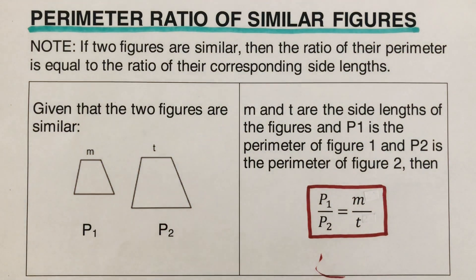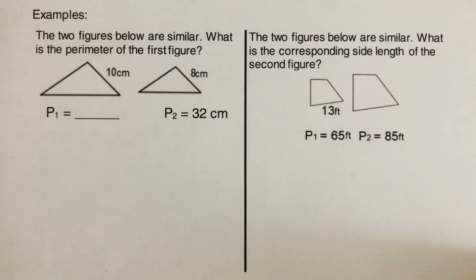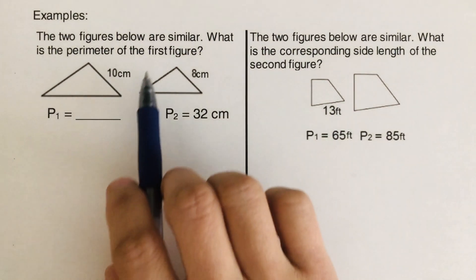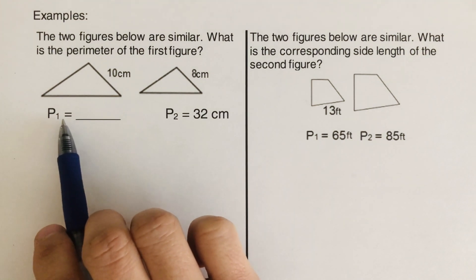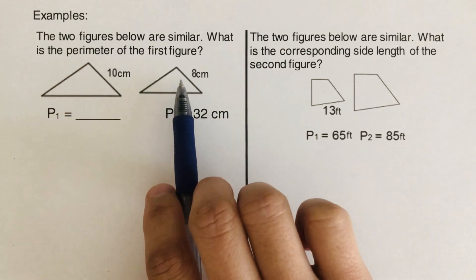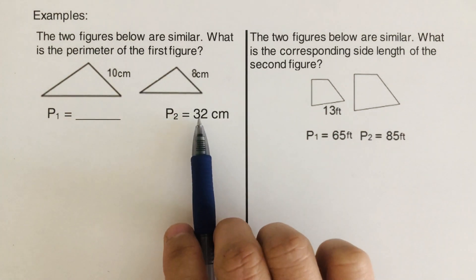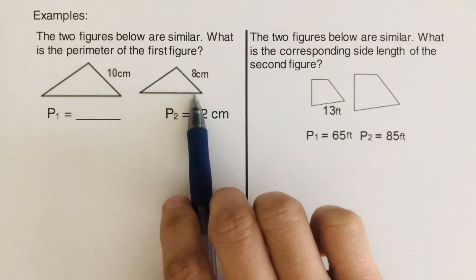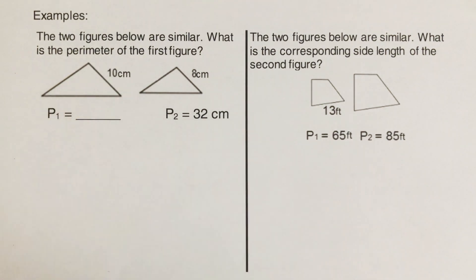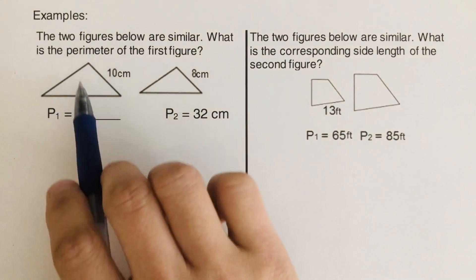Let's look at an example to better see how this formula works. Suppose I have these two pictures here, and it says they are similar. We're looking for P1, the parameter of the first figure. The side length for the first picture is 10 centimeters, and the side length of the second is 8 centimeters. The parameter of the second triangle is 32 centimeters, and the parameter of the first is missing.